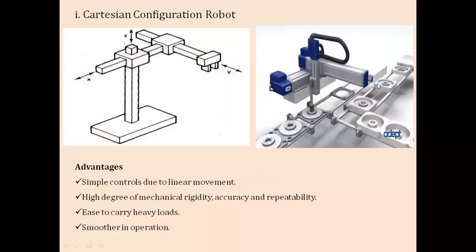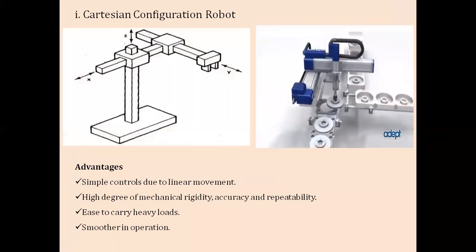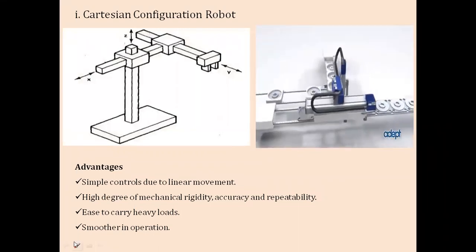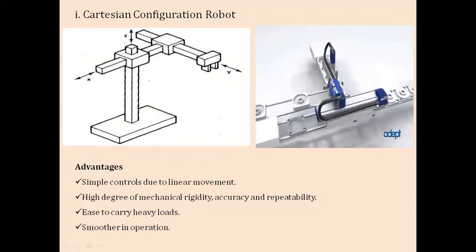The first configuration we are observing is the Cartesian configuration robot. In this configuration, as shown in the picture, the robotic arm moves along X, Y, and Z axes. It is a type of robot that has three sliding joints, with motion along either direction of the X, Y, and Z axes — sliding joints along all three axes in three-dimensional space.